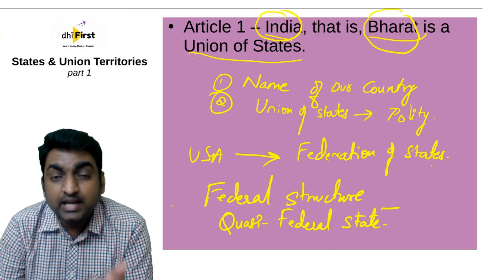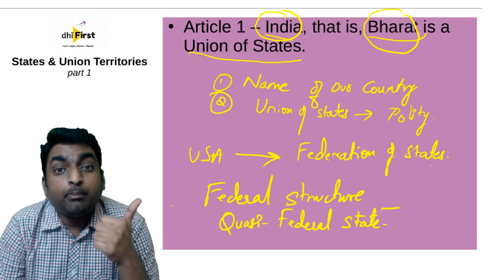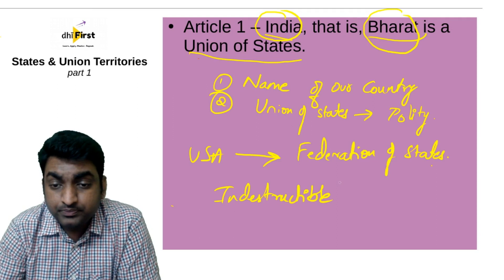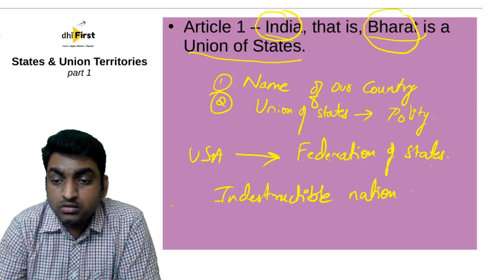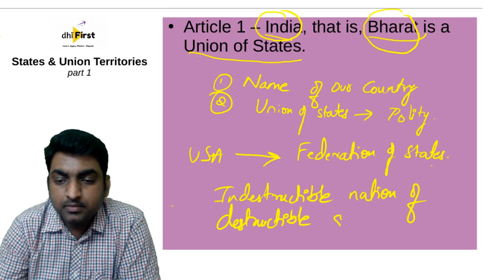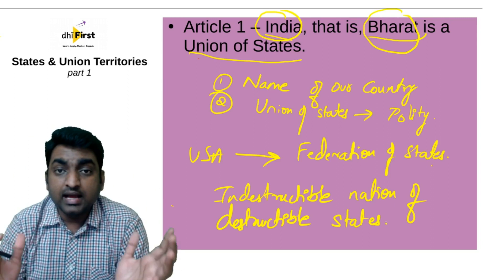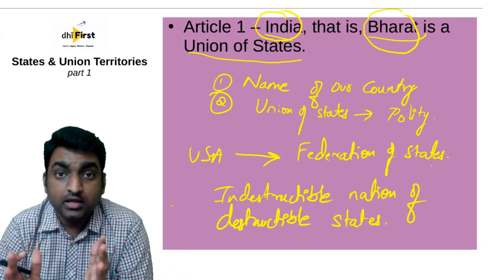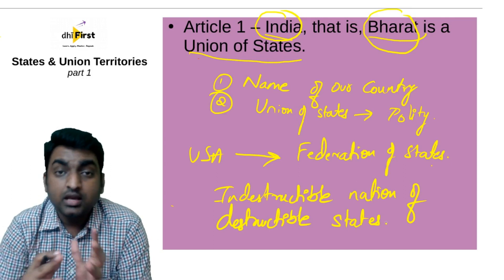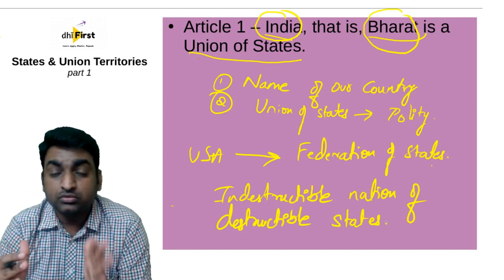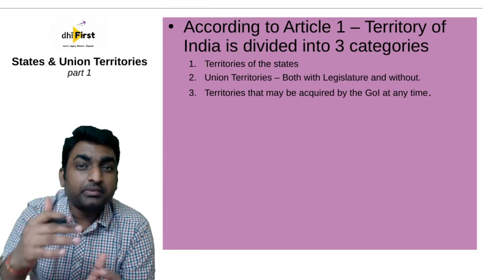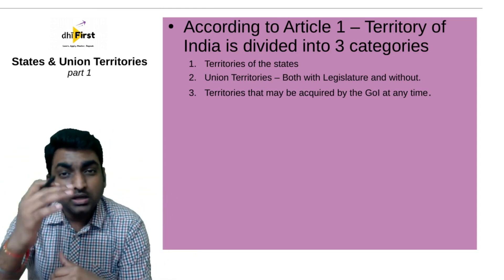Article 1 helps us understand the official name of our country and what kind of polity we are — a union of states. And what kind of nation? We are an indestructible nation of destructible states. That means as a whole nation, we cannot be destroyed or split into pieces. But as a state, the area can be changed or destructed — as happened when the entire Andhra Pradesh was split into Telangana and Andhra Pradesh.